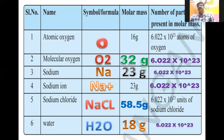From our textbook there is a question on the mole concept with these answers. Atomic oxygen (single atom) is indicated by the symbol O; its molar mass is 16 grams, containing 6.022 × 10²³ atoms of oxygen. Water is a molecule with symbol H₂O; its molecular mass is 18 grams, and 18 grams of water contains 6.022 × 10²³ water molecules. Sodium ion is Na⁺; its molar mass is 23 grams, containing 6.022 × 10²³ ions. This concludes our chapter.